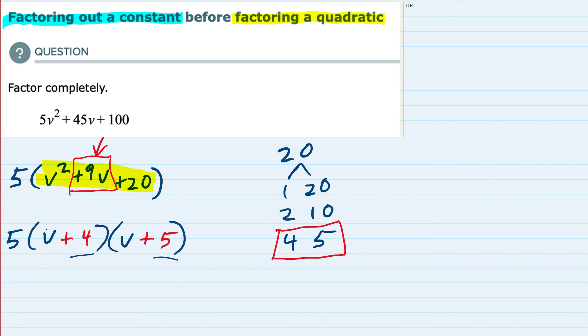if we multiply v times v, that would give me the v². And then on the outside, I have a 5v, and on the inside, I have a 4v.